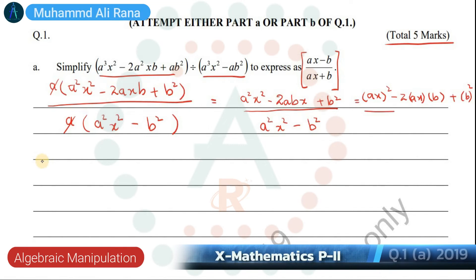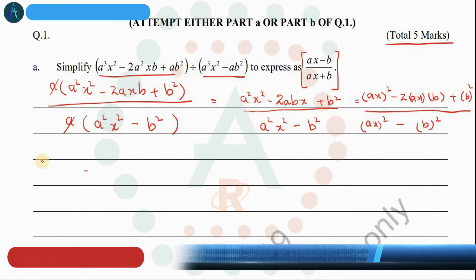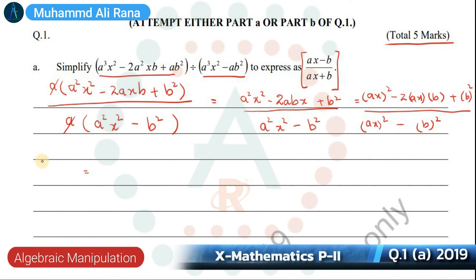We apply the difference of squares formula, so we have AX whole square minus B whole square. When we apply the perfect square formula to the numerator, it becomes (AX - B) whole square.